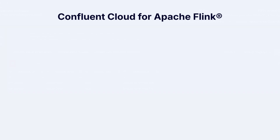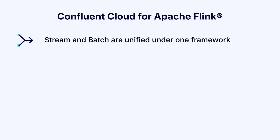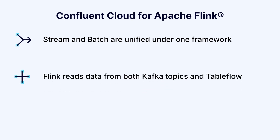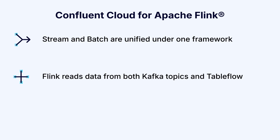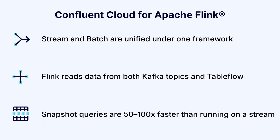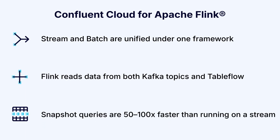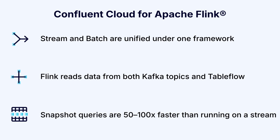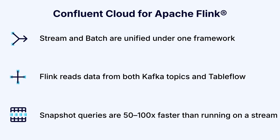With Confluent Cloud for Apache Flink, Stream and Batch are playing on the same team, unified under a single framework, allowing developers to use the same APIs and logic across bounded and unbounded datasets. Snapshot queries work hand-in-hand with Tableflow, our tool to help you convert Kafka topics and associated schemas to open table formats. You don't need to specify whether the data comes from Tableflow or Kafka. Flink can read tables that store large volumes of historical data, helping you link your real-time streaming insights with deep historical context.